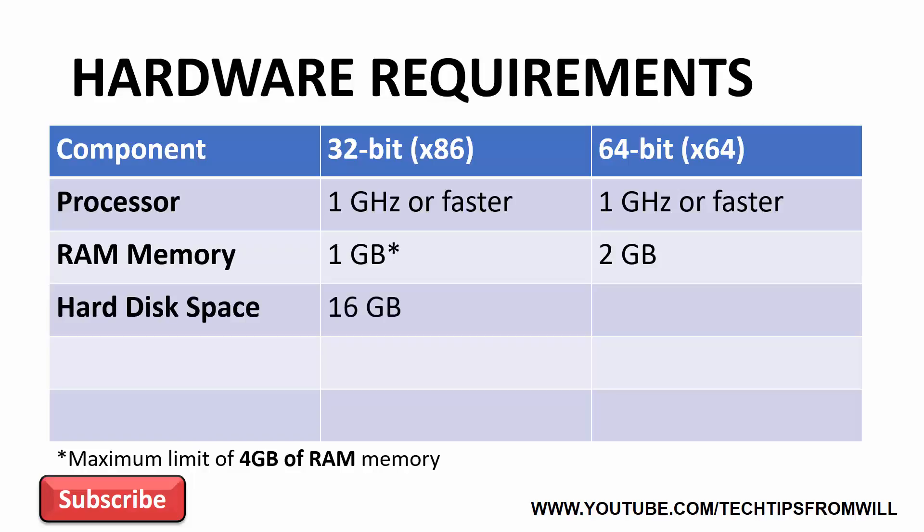32-bit Windows 10 requires at least 16 GB of free disk space for a successful installation. For 64-bit Windows, at least 20 GB of disk space is required. This may seem a lot, but when you consider the number of system and temporary files that are copied and reorganized during the install period, it's easy to see why this amount of disk space is necessary.